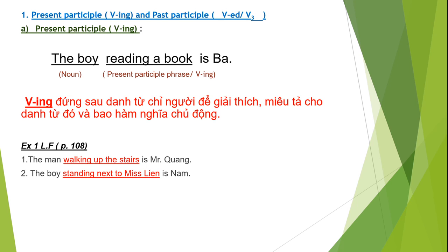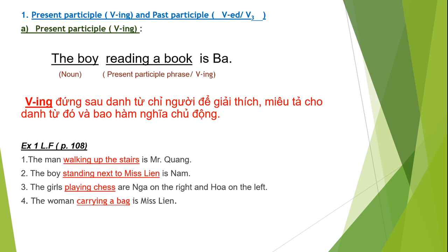Cụm từ 'walking' đứng sau 'the man' để bổ nghĩa cho danh từ chỉ người. Tiếp tục ví dụ thứ hai: 'The boy standing next to Miss Linh is Nam' — cậu con trai đang đứng kế Miss Linh là Nam. Và một ví dụ nữa: 'The girls playing chess are Nga on the right and Hoa on the left' — những cô gái đang chơi đánh cờ, Nga ngồi bên phải còn Hoa ngồi bên trái.